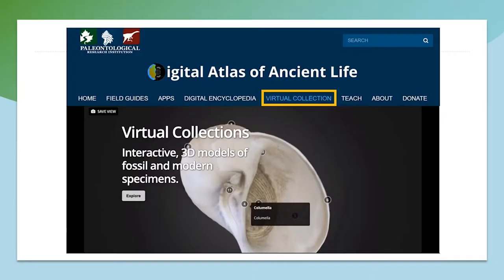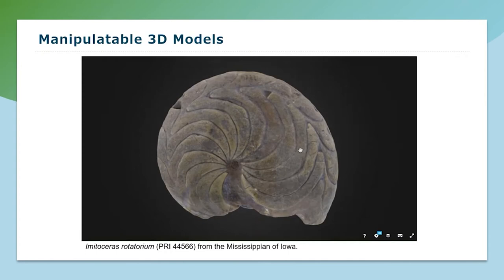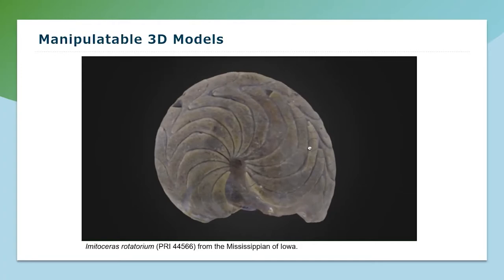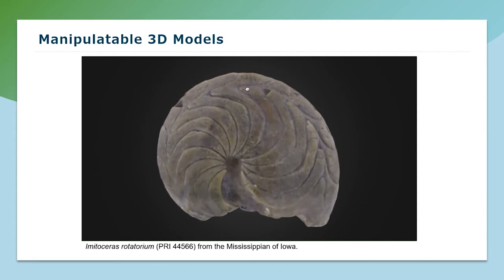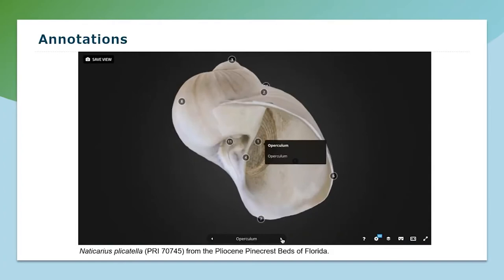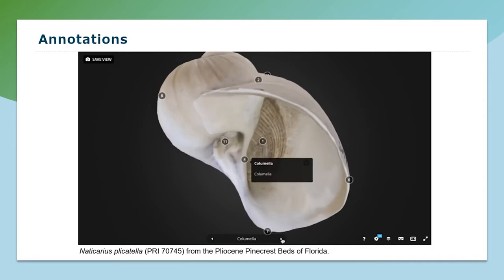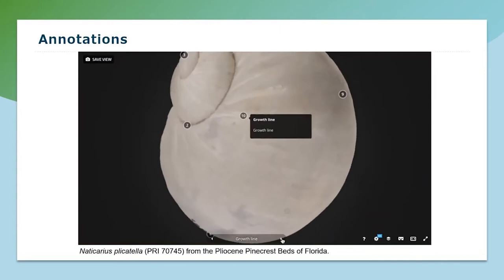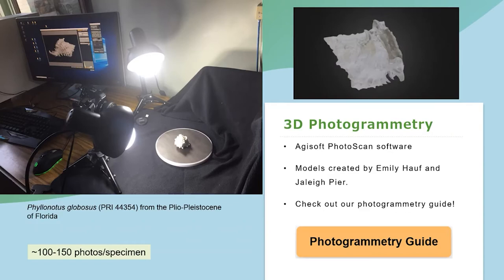Creating 3D models in these virtual drawers gives the public and anyone with an interest access to these really awesome specimens. This is what our webpage looks like — you can find the virtual collection here. Each of our 3D models is manipulable, meaning it's as if you are holding the specimen in your hand: you can turn it over, investigate, and zoom in on distinguishing characteristics or zoom out. Additionally, many of our specimens are annotated — distinctive characteristics and features have been labeled and described, adding another level of interactability and creating a unique virtual learning environment.